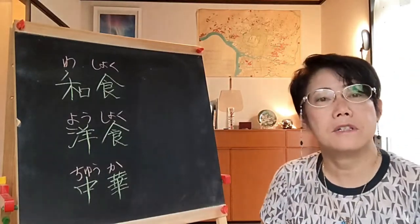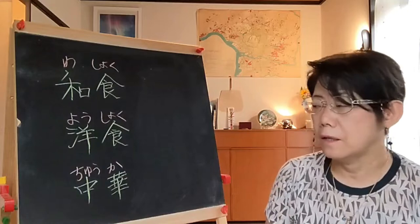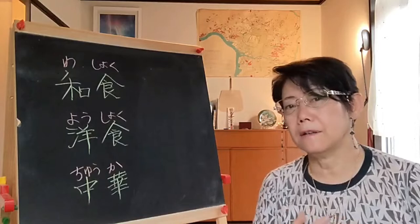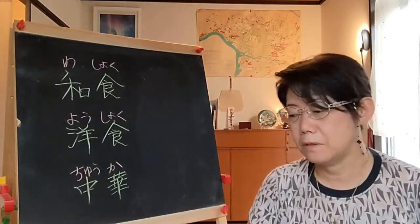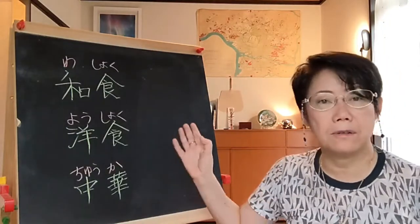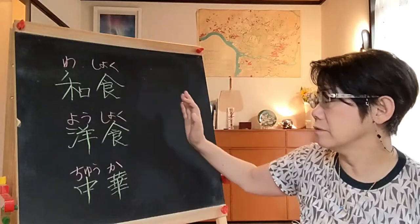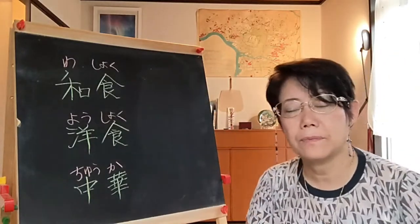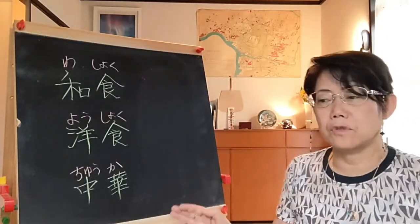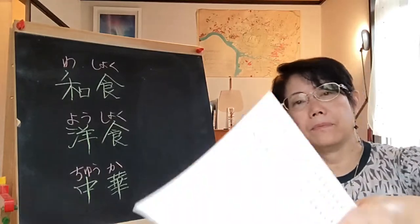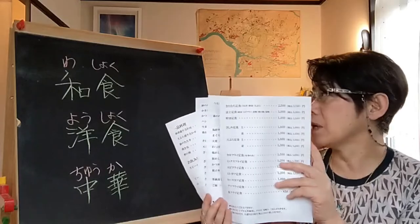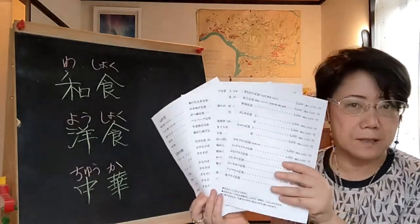And chuka is Chinese food. Ramen belongs to chuka, but we have many Japanese-style ramen, so it sits between washoku and chuka. Today I'm going to introduce you to a Japanese washoku no mise — a washoku restaurant.